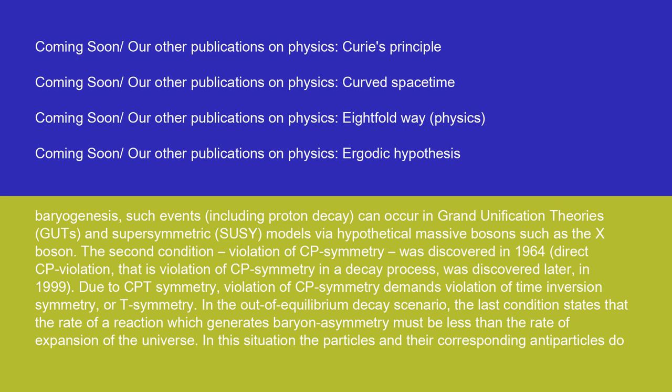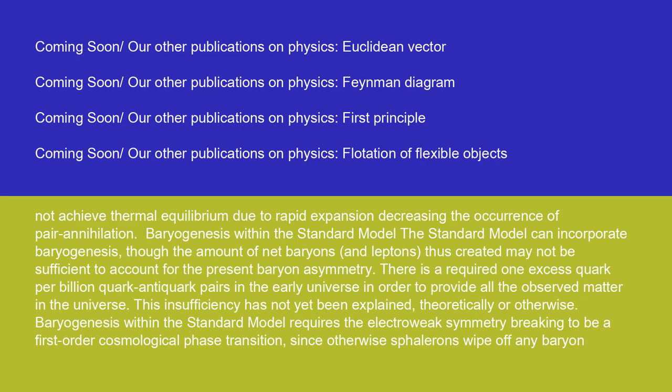The second condition — violation of CP symmetry — was discovered in 1964; direct CP violation, that is violation of CP symmetry in a decay process, was discovered later in 1999. Due to CPT symmetry, violation of CP symmetry demands violation of time inversion symmetry, or T symmetry. In the out-of-equilibrium decay scenario, the last condition states that the rate of a reaction which generates baryon asymmetry must be less than the rate of expansion of the universe. In this situation, the particles and their corresponding antiparticles do not achieve thermal equilibrium due to rapid expansion, decreasing the occurrence of annihilation.